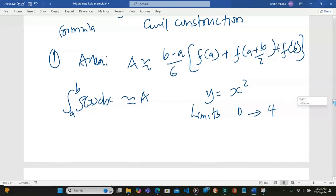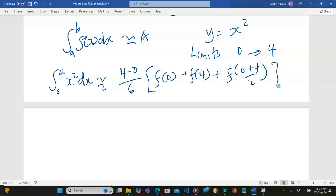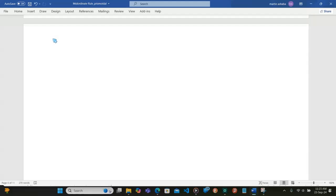So integral from 0 to 4 of x squared with respect to x is going to be approximately equal to 4 minus 0 divided by 6, then into f of 0, plus f of 4, plus f of 0 plus 4 out of 2.